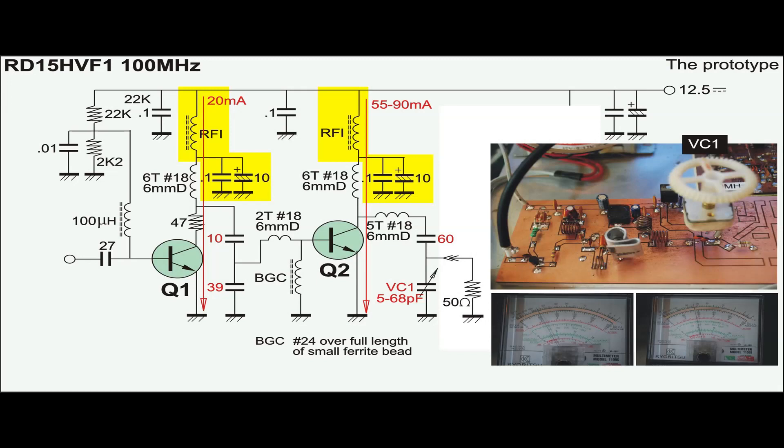Note that tuning Q2 to drive a 50 ohm resistive load causes a wide variation in collector current from 50 to 90 mA.